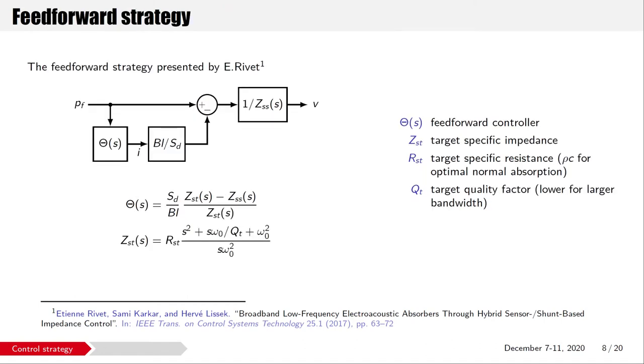I will later compare my control to the feedforward architecture from Etienne Rivet. So I will quickly present what his feedforward strategy is. There is a digital controller, theta, that measures the pressure in front of the membrane, using a microphone, and outputs a current into the speaker coil. By knowing the transducer model and the target impedance Z_st, the control law can be found. The target cannot be purely real for stability reasons. It is modeled as a modified version of the passive impedance, in which the target resistance R_st and the quality factor Q_t are tuned. If these targets differ too much from the natural behavior of the speaker, instabilities can happen due to the control digital delay and the model inaccuracies.